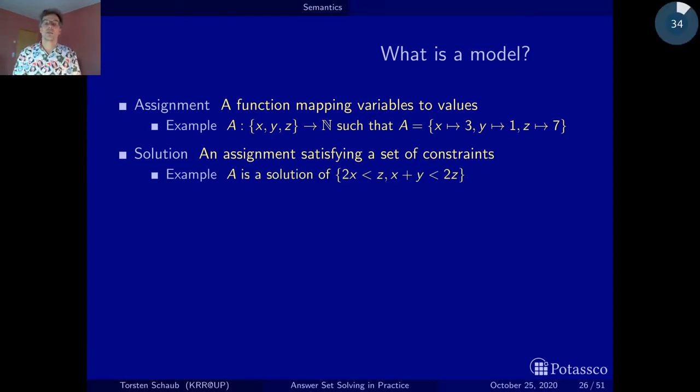Here's a particular assignment. This assignment assigns x to 3, y to 1 and z to 7. There are very many assignments that one can form over x, y, z and mapping them into natural numbers. But now we want only those assignments that satisfy a problem. And the problem is specified by constraints. Let's look at a little problem here. This problem is composed of two constraints: 2x < z and x + y < 2z. Given an assignment to x, y and z, 2 times the value of x is smaller than the value of z, and the value of x plus the value of y is smaller than 2 times the value of z. In our case, 2 times 3 is 6, smaller than 7. And x plus y is 4, smaller than 14. So this particular assignment satisfies both constraints.